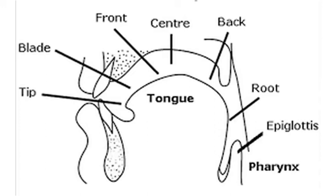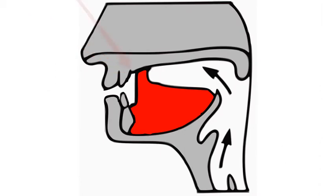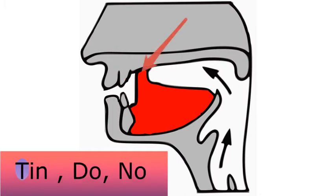Any part of the tongue can be raised to any height. The tip can touch the upper teeth. The tip and the blade can touch the teeth ridge. The front of the tongue can be raised towards the hard palate. The back of the tongue can touch the soft palate. The tip of the tongue and the rims may touch the upper teeth to produce sounds, and the tip and blade may make contact with the teeth ridge to produce initial consonant sounds.